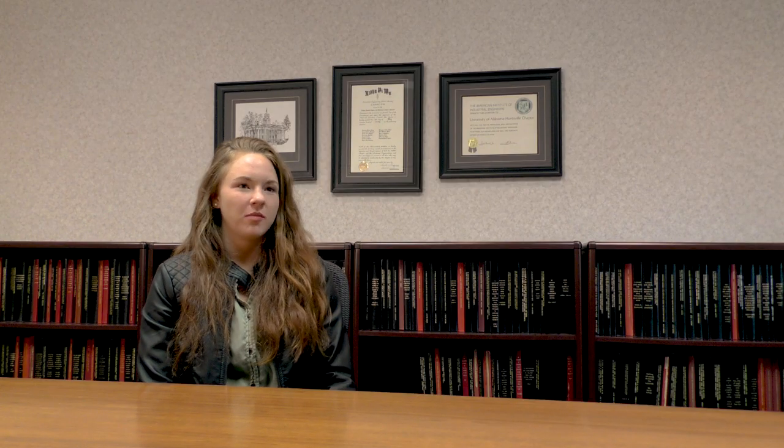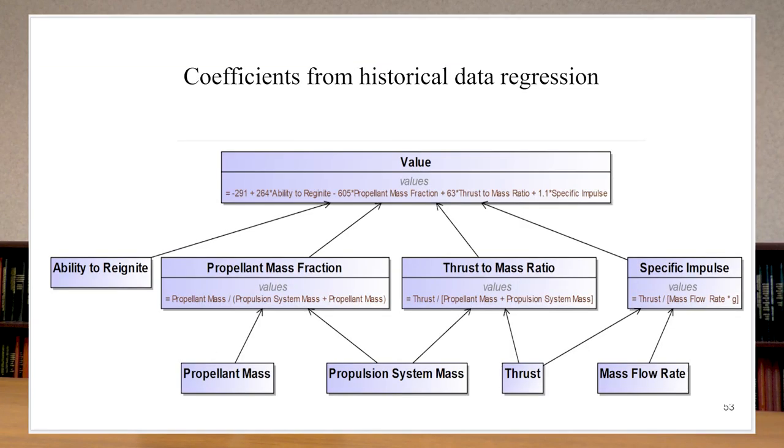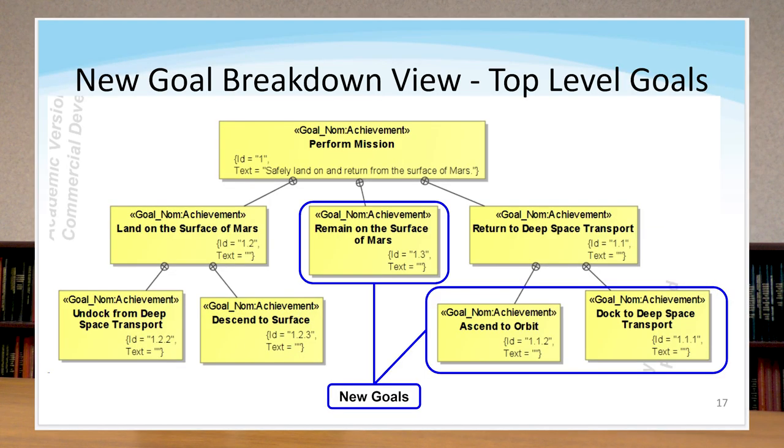It depends on how you define success, because from the beginning of the project to now, our scope has really changed a lot. We developed a value model, a very high-level value model, and we developed goal function trees, and we did all that stuff, but it wasn't necessarily what we thought we were going to do.